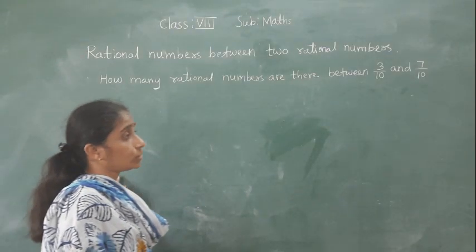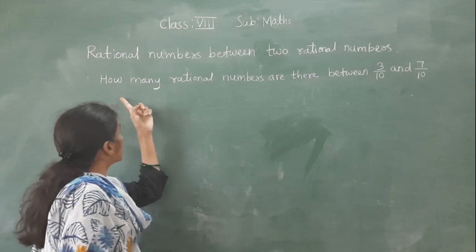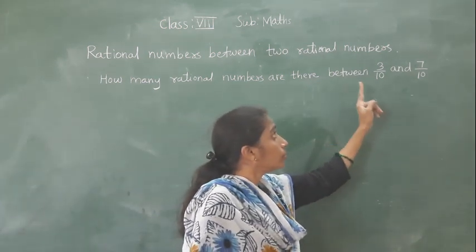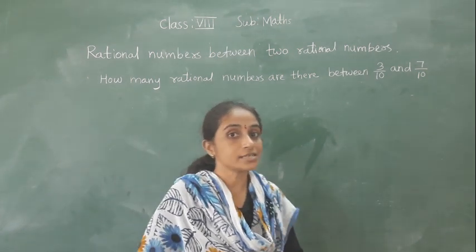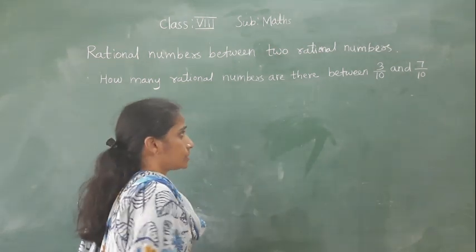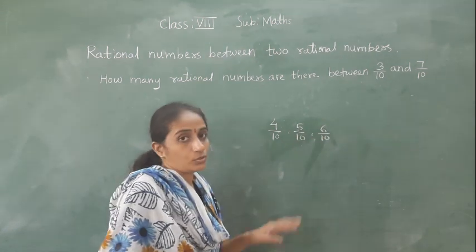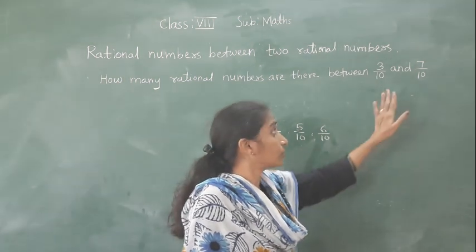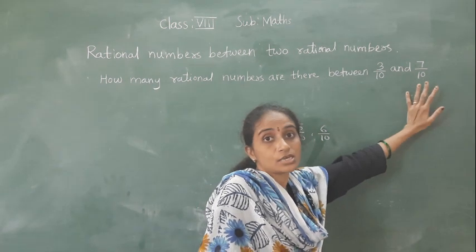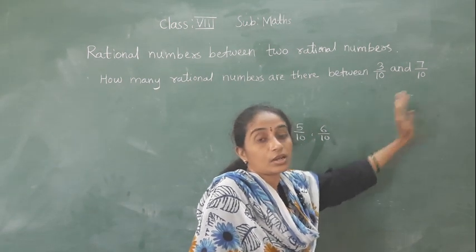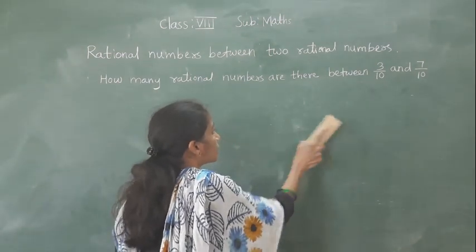Now let's learn: rational numbers between 2 rational numbers. The first question: how many rational numbers are there between 3 upon 10 and 7 upon 10? You might have thought: 4 upon 10, 5 upon 10, and 6 upon 10 — these are the rational numbers. This is correct, but there are many more rational numbers in between these 2 rational numbers. We cannot say a definite number.